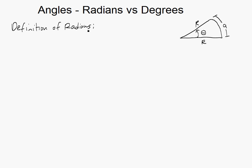By definition, radians — the angle in radians — is equal to arc length divided by R.